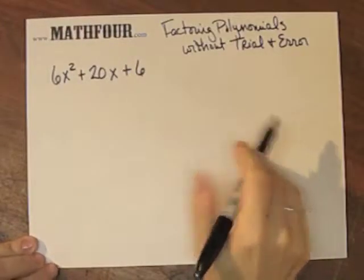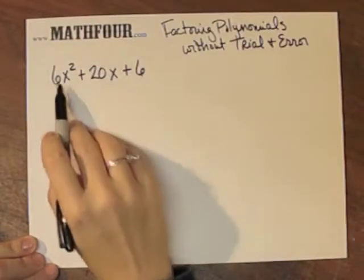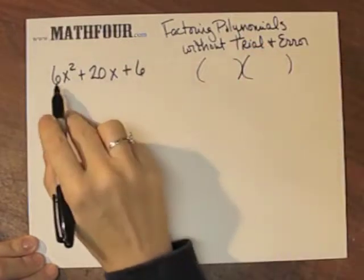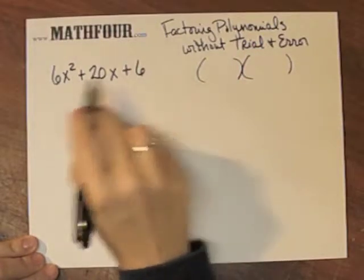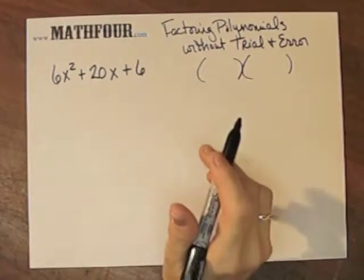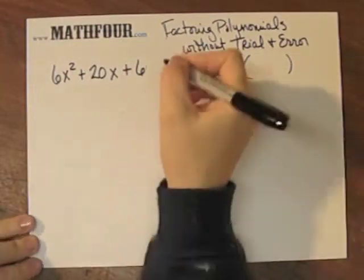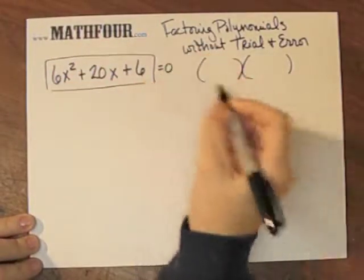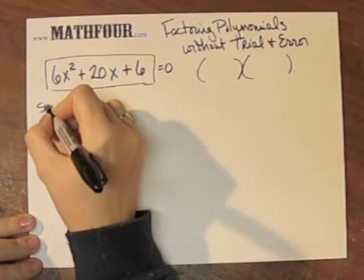I'm going to factor this polynomial without trial and error, because you notice I'm going to have to figure out, okay, so 3, 2, what's going on? So I don't even want to bother with that. I'm going to go straight to the quadratic formula. I'm going to say this is our original problem. I'm going to say this is equal to 0, so I can solve for x.